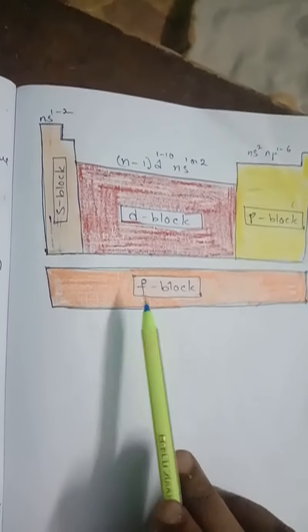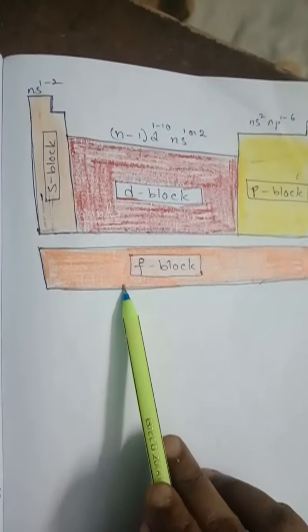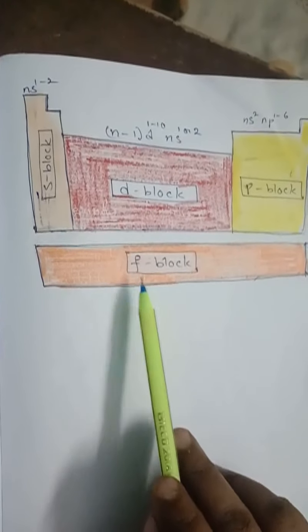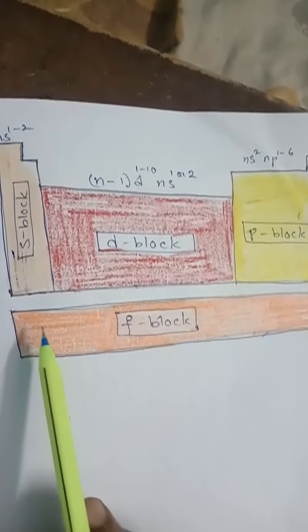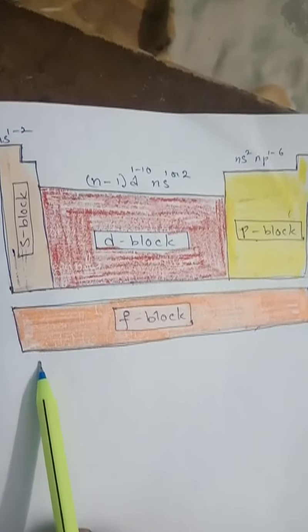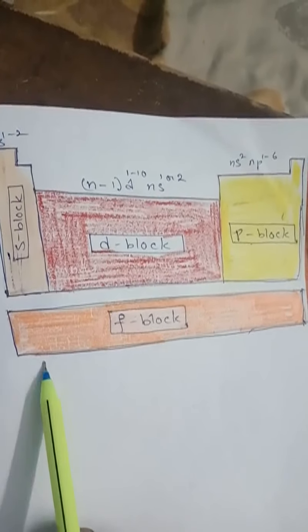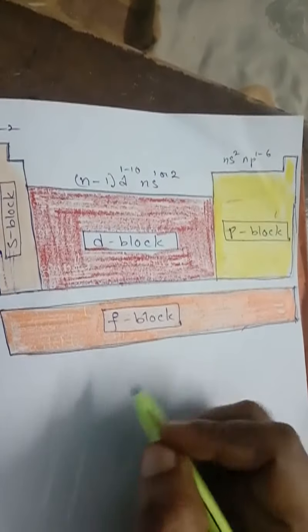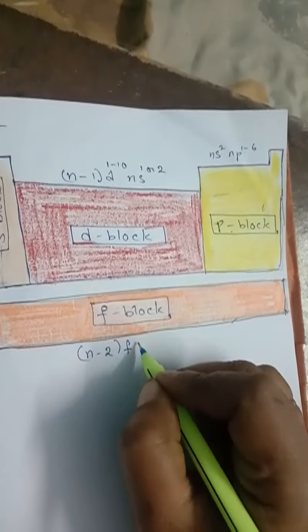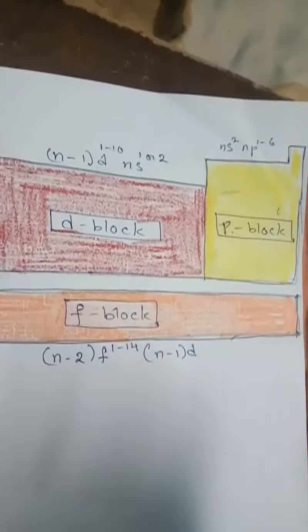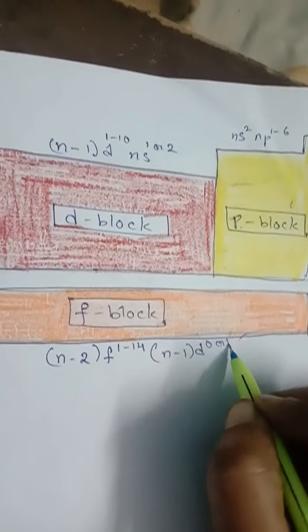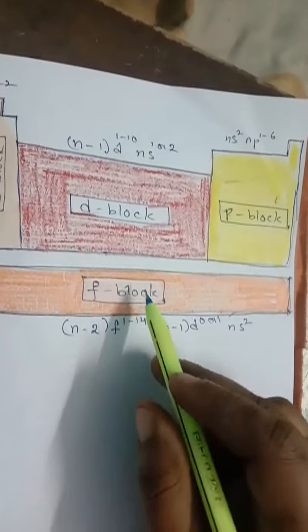F block elements are those in which the differentiating electron enters into the anti-penultimate shell, the (n−2)f subshell. They contain 14 groups. The first series is the 4f series, called the lanthanides — present in the sixth period, third group. The second is the 5f series, called the actinides — present in the seventh period, third group. The general valence shell configuration is (n−2)f1-14, (n−1)d0-1, ns2.